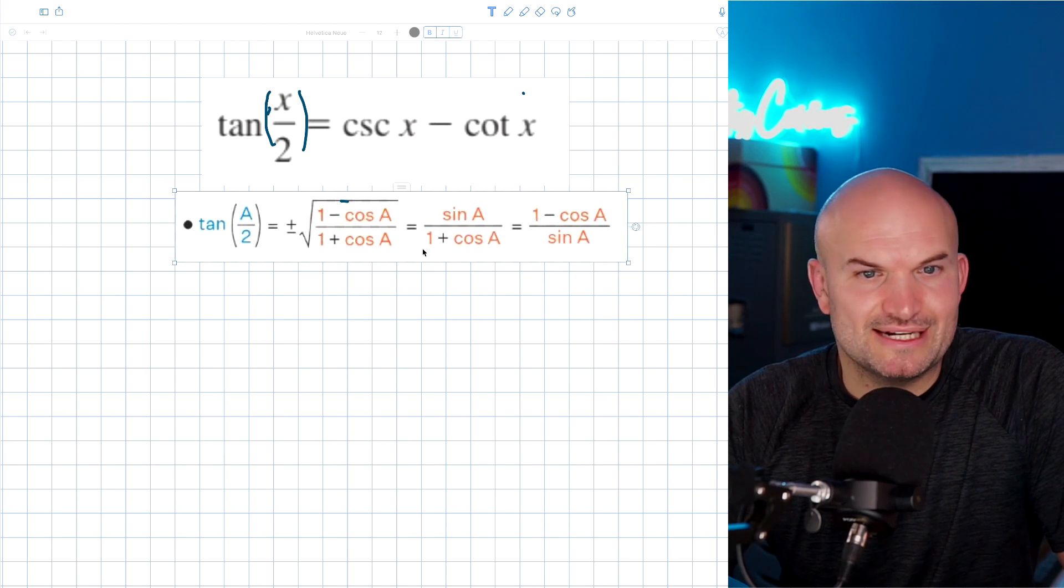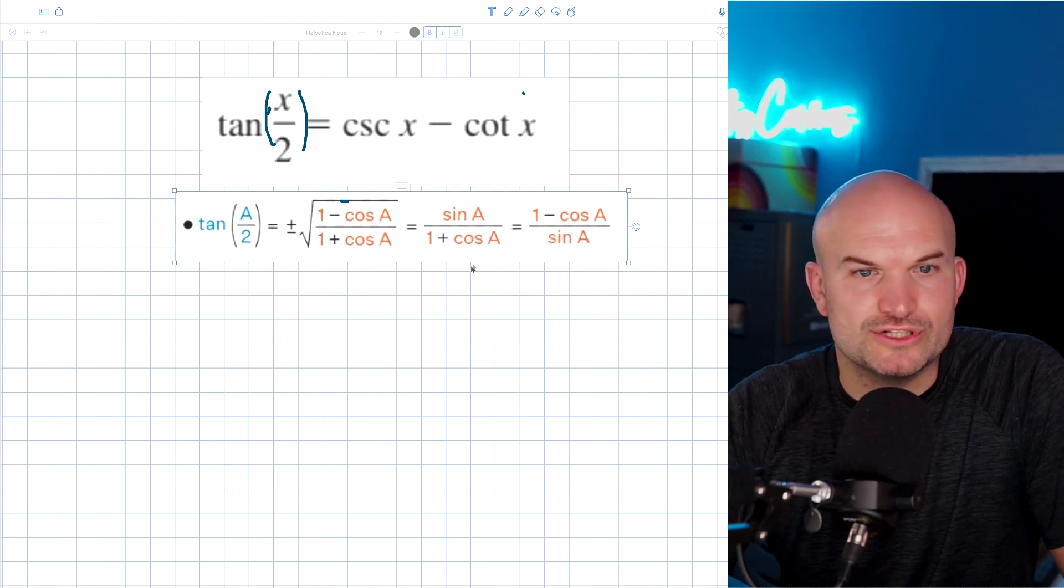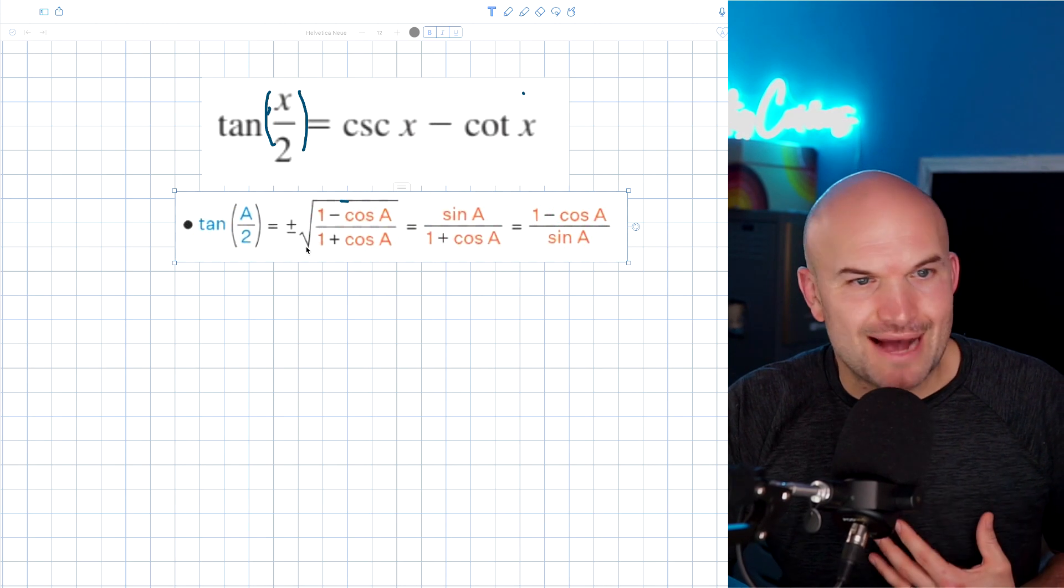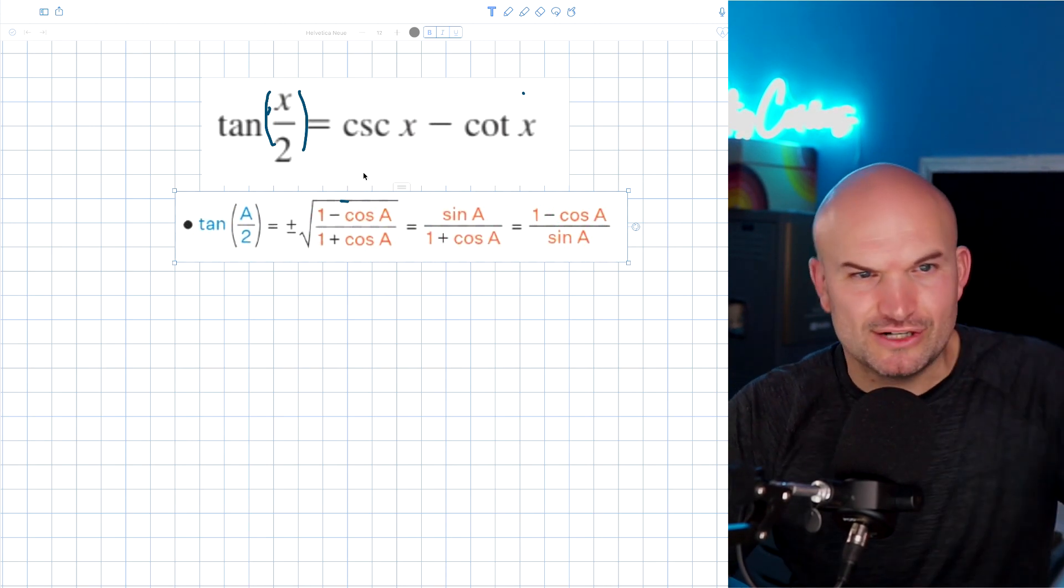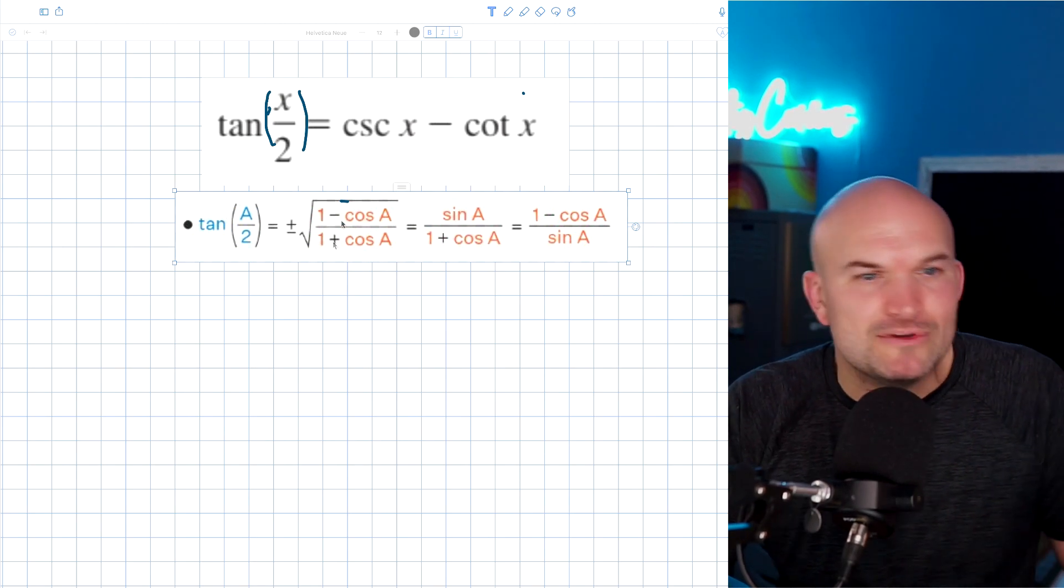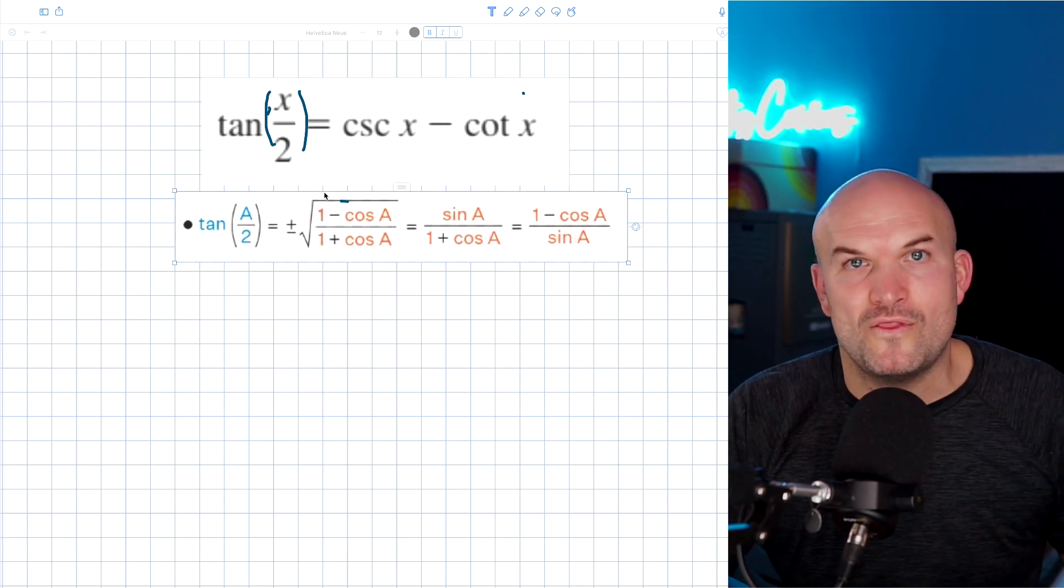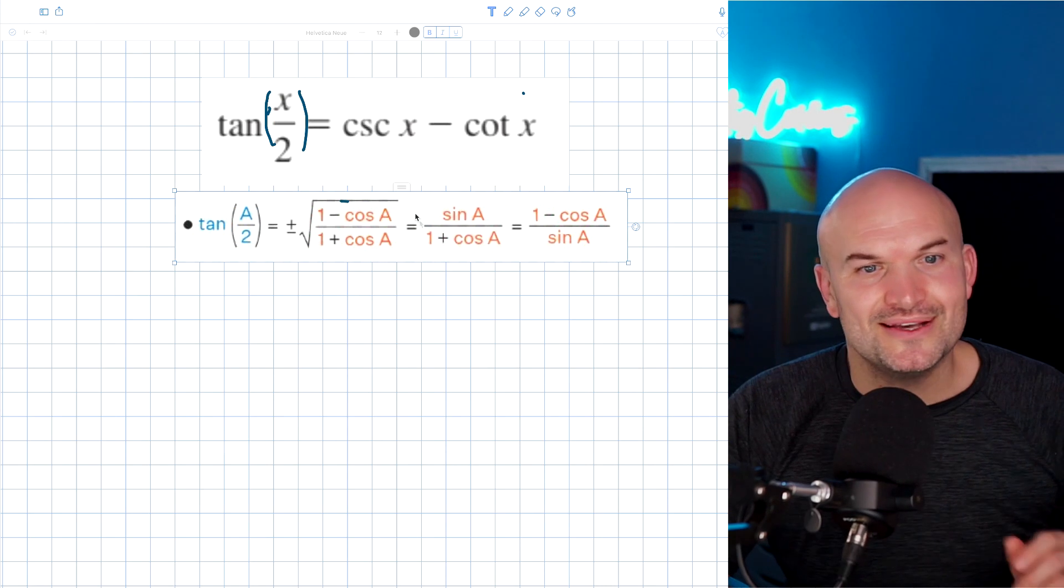So here's your half angle identities. Now, which one identity are you going to choose? I think majority of us are saying, I'm not going to choose this first identity, right? Because why would you want to introduce a square root? Is there any square root on the right hand side? No. So why would you want to choose a square root on the left hand side? There's no reason to, so don't do that.